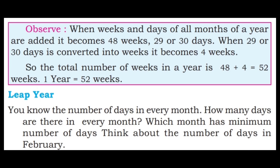When the weeks and days of all months of a year are added, it becomes 48 weeks and 29 or 30 days. When 29 or 30 days is converted into weeks, it becomes 4 weeks. So the total number of weeks in a year is 48 plus 4 equals 52 weeks. 1 year is equal to 52 weeks.